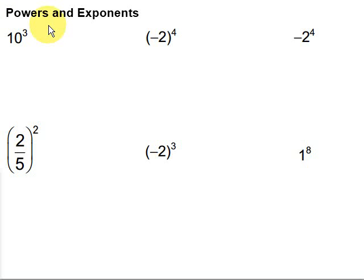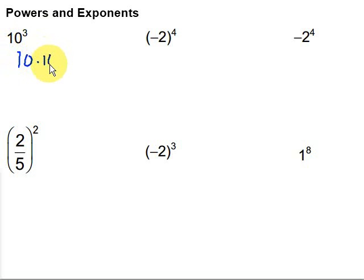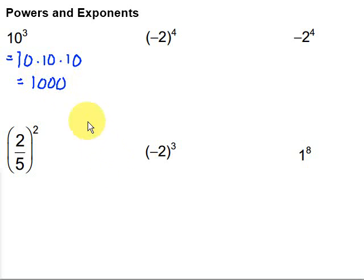Powers are a way of writing repeated multiplication. Sometimes people are confused and want to say that this is ten times three — no, it's not another way to write multiplication, it's a way to write repeated multiplication. So what this is saying is we have ten being multiplied by itself three times: ten times ten times ten. Ten times ten is one hundred, times another ten is one thousand. So ten to the third power is one thousand.